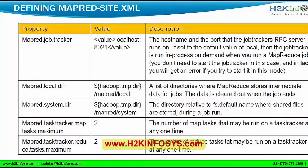The property 'mapred.system.directory' is the directory related to 'fs.default.name' where shared files are stored during a job run. Generally many shared files will be used by different data nodes, and those shared files are declared in this particular property. Another important property is 'mapred.tasktracker.map.tasks.maximum' — it tells you the number of map tasks that may run on a task tracker at a single point of time. For example, if I am running a MapReduce program, it can run in parallel in different data nodes at the same time. The default value is 2, meaning 2 map tasks can run simultaneously.